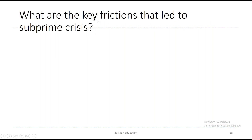An important point tested by GARP: what are the key frictions that led to the subprime crisis? There are approximately nine frictions identified, but the key ones to remember are tested.